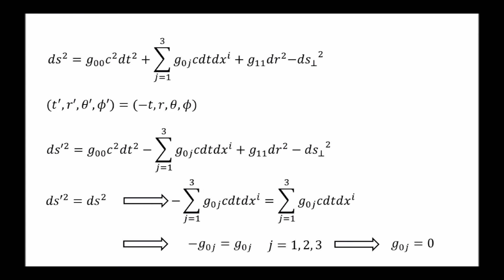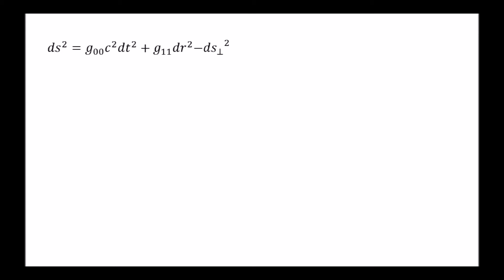So, based on symmetries alone, we conclude that the square spacetime distance must be of this form, where g00 and g11 are functions of r only.